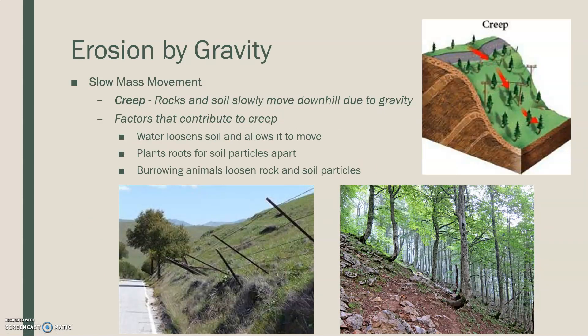Erosion by gravity. We know what goes up must come down, so gravity is literally pulling material down the hill. There are slow and fast mass movements. In slow mass movement, the first example is a creep — rocks and soil slowly move down the hill because of gravity. A few things contribute to this: water that loosens the soil allows it to move; plants burrow around inside the soil looking for food or creating habitat, which loosens it further. So anytime you look at a hill and notice a J-shaped tree trunk, that's caused by the creep — it's the change in the actual landform itself.